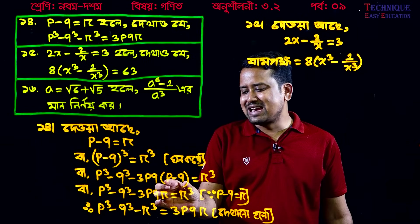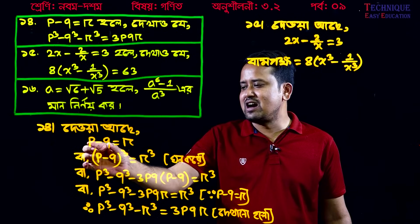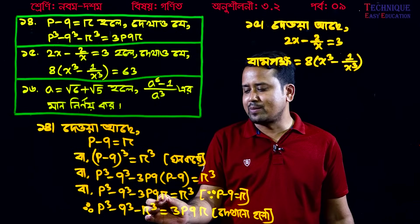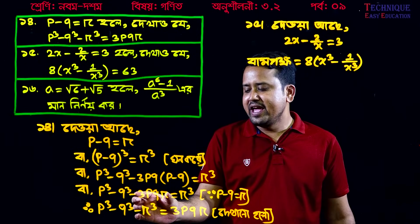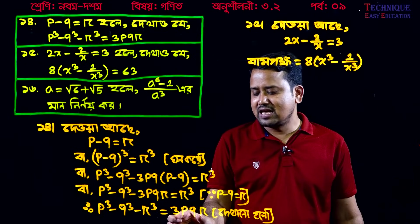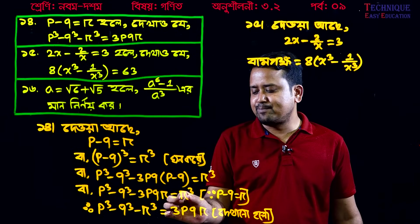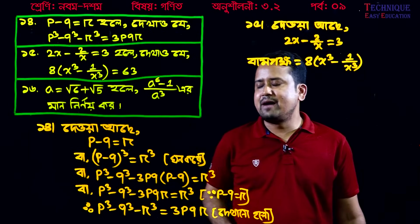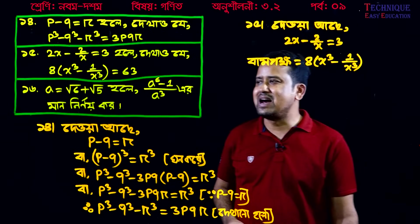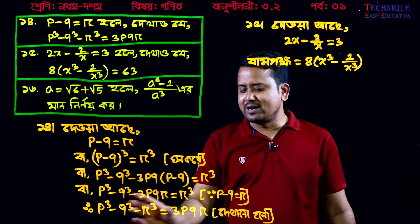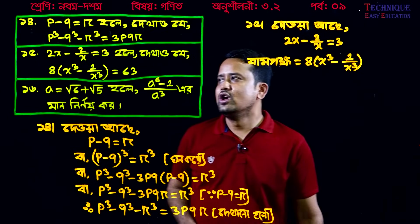So p minus q is r. Working through p minus q cube minus r, the signs continue alternating minus, plus, minus.